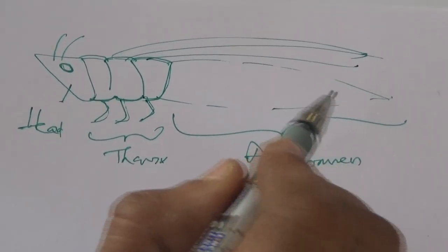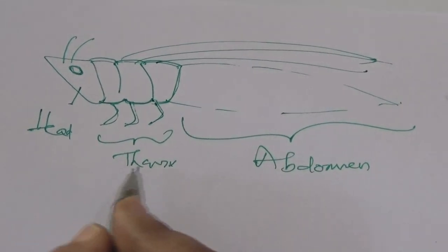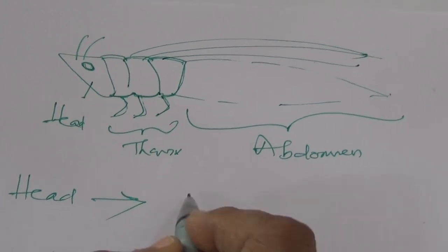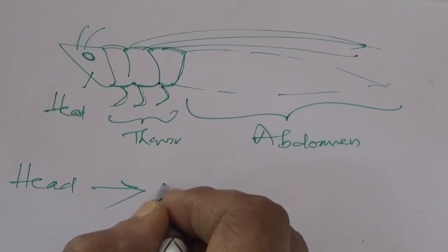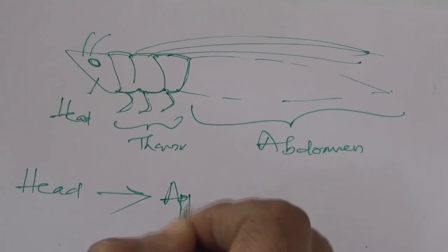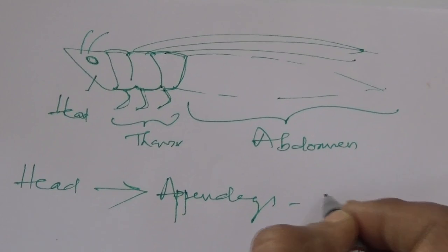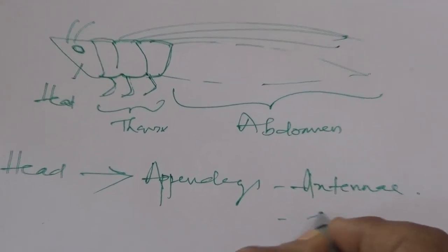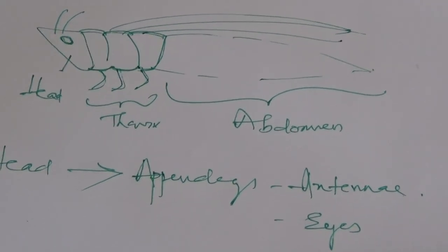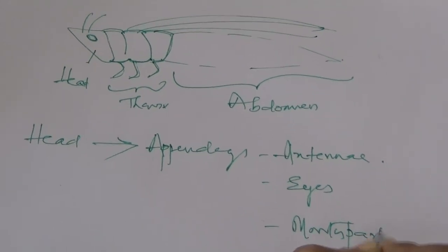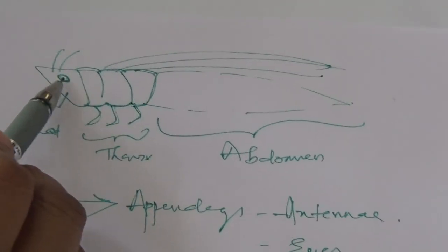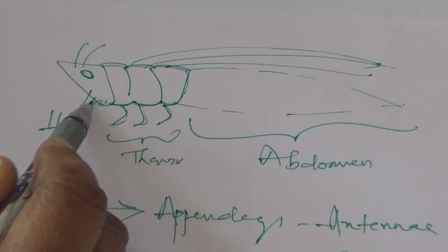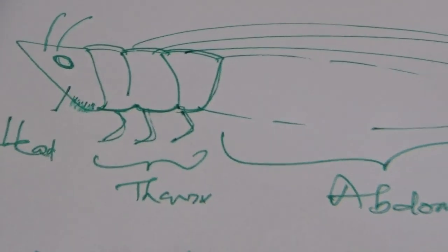Now when you look at the individual parts, first we take the head. The head of the insect usually has different appendages. The most basic appendages in the head include: number one, a pair of antennae; number two, a pair of compound eyes; and lastly, the mouthparts. On the figure you can see a pair of antennae, compound eyes, and on the lower side the mouthparts including the mandibles and maxillae, which you have already studied in intermediate.